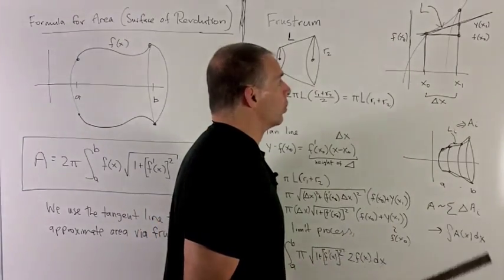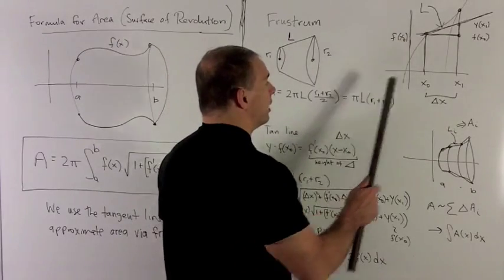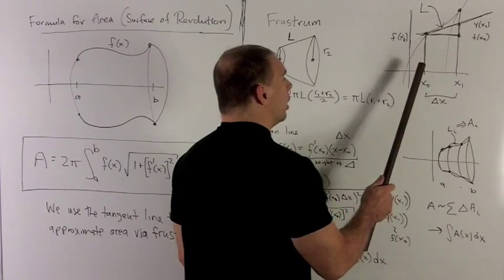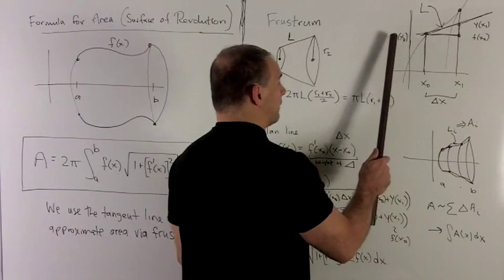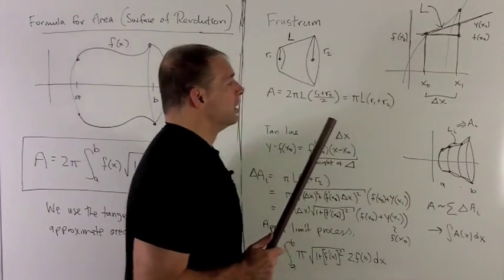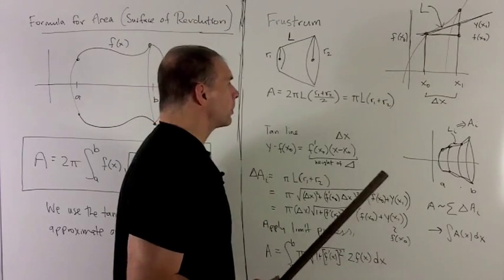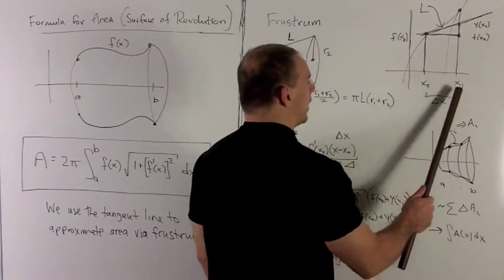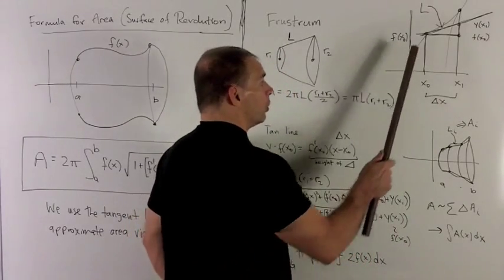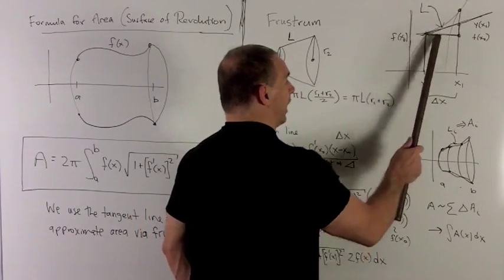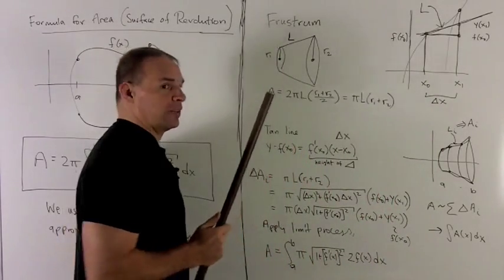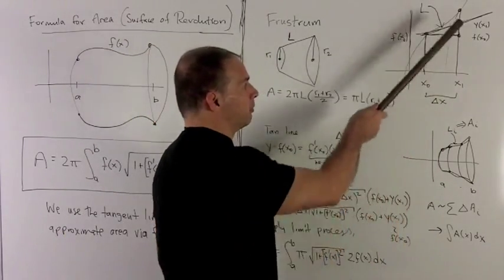To get a handle on the frustrum, I need L, R1, and R2. R1 and R2 are easy: R1 is just f(x₀), the point on the curve above x₀. Choosing x₁ gives the base of a right triangle equal to Δx. I want that right triangle because, with the base and height, I can use the Pythagorean theorem to get L, and then L lets me compute the frustrum area. I'll bring in the tangent line to get the height and the second radius.